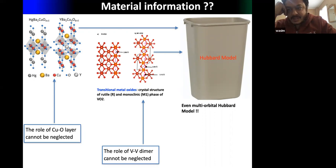However, model-based calculations are always based on a simple model, and sometimes the structural properties of a material can be really important. We cannot simply map every material to a Hubbard model — even a multi-orbital Hubbard model cannot always be good enough.